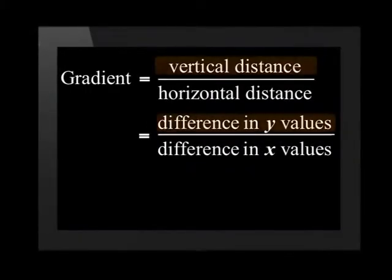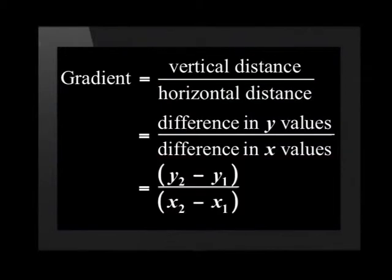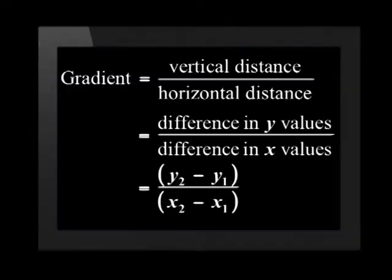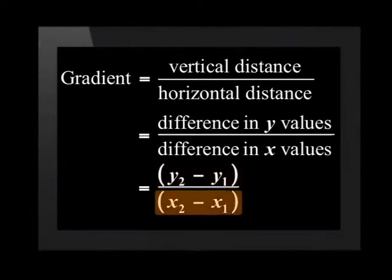That sounds complicated. Could you show me that again? Sure. We can say that the vertical distance is the difference between the y values, and the horizontal distance is the difference between the x values. Which means that the gradient is the difference in the y values divided by the difference in the x values. Difference means to subtract, right? Exactly. So the gradient is the second y value minus the first y value divided by the second x value minus the first x value. So the gradient is equal to y2 minus y1 divided by x2 minus x1.